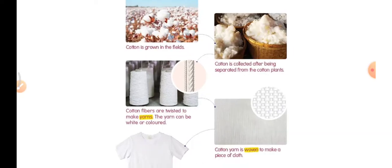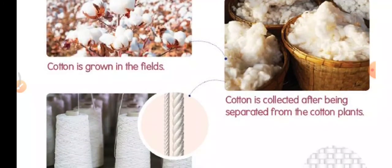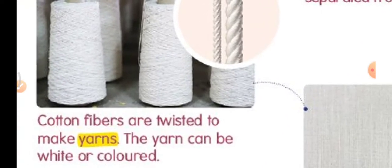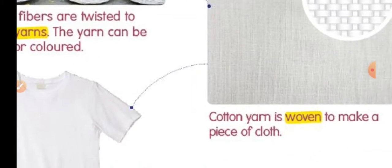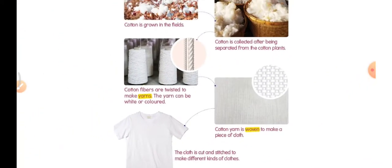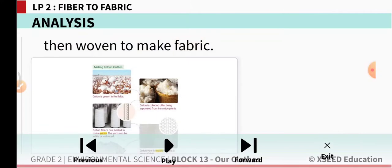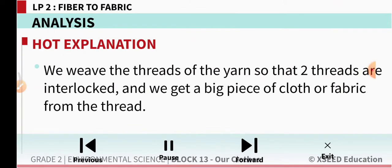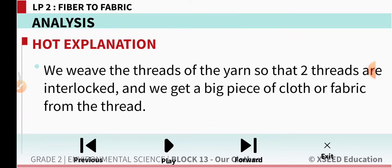Here are the steps to make cotton clothes. Cotton is grown in the fields and collected after being separated from the seeds. Then cotton fibers are twisted to make yarns, which can be white or colored. The yarn is woven to make a piece of cotton cloth. The cloth is then cut and stitched to make different kinds of clothes. We weave the threads so that two threads are interlocked and we get a big piece of fabric.